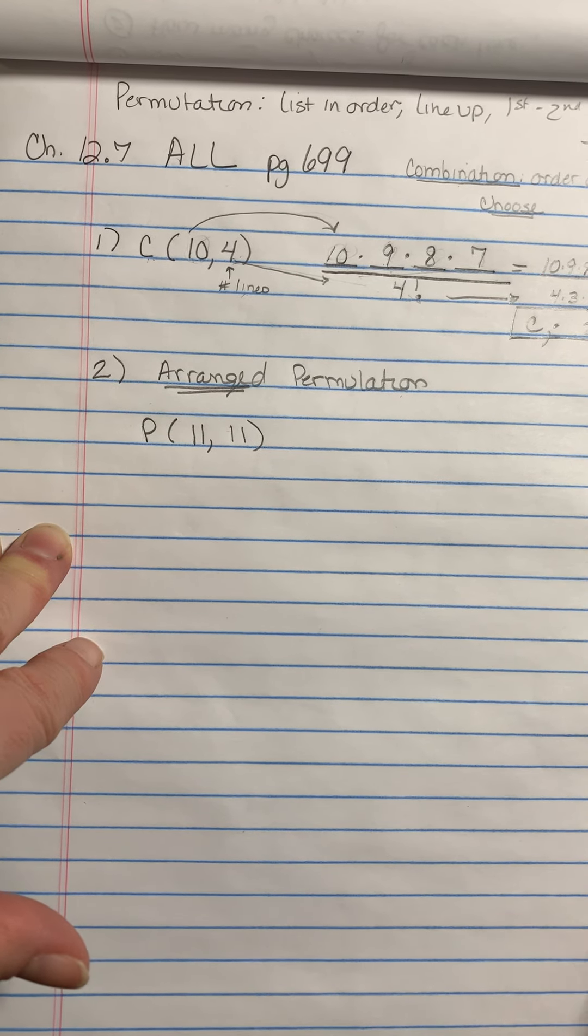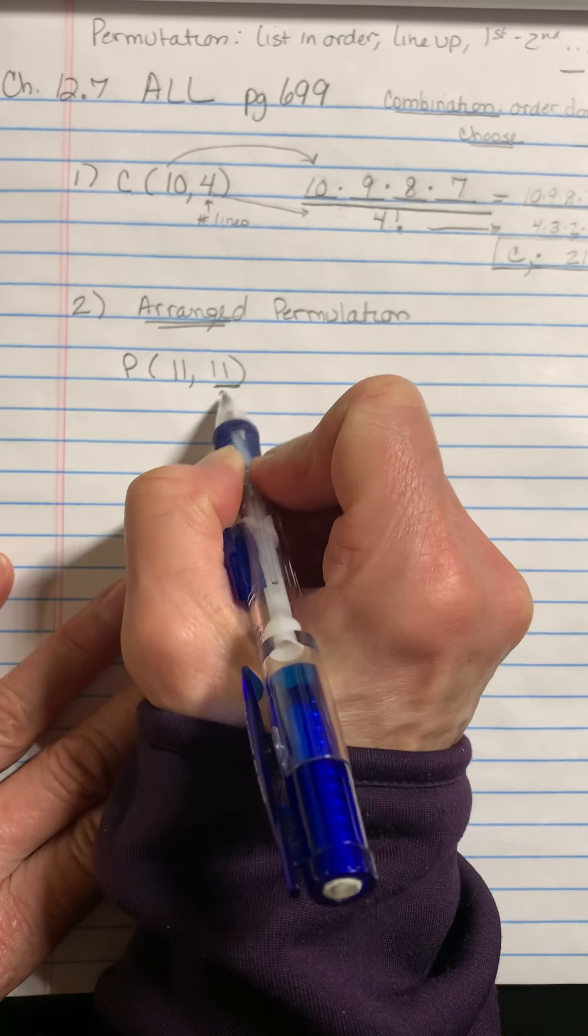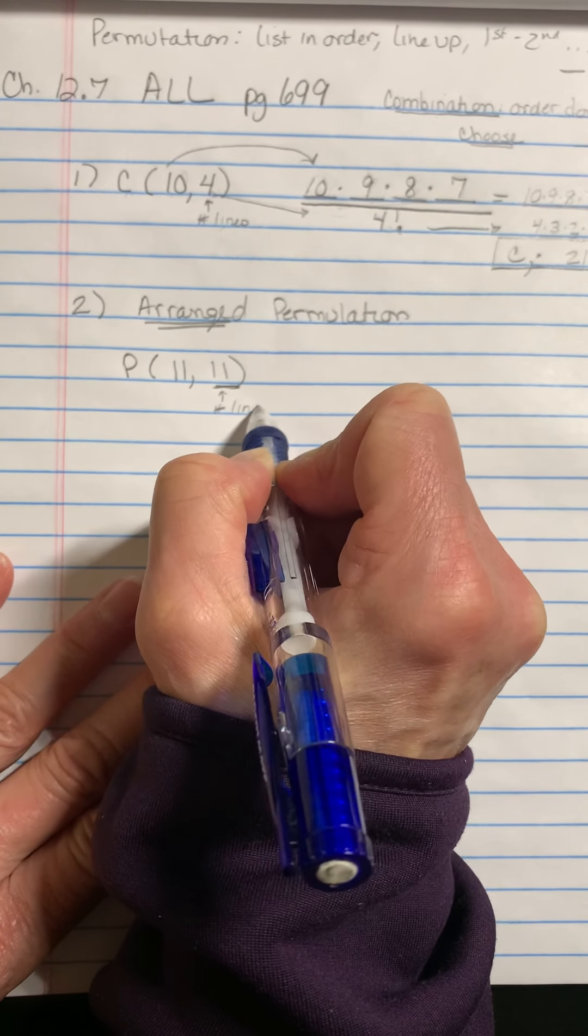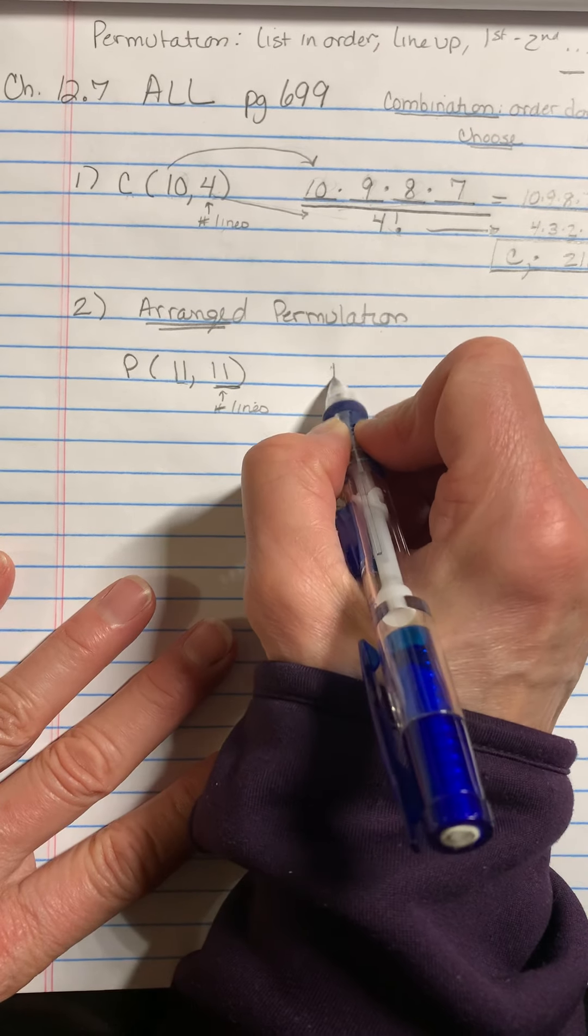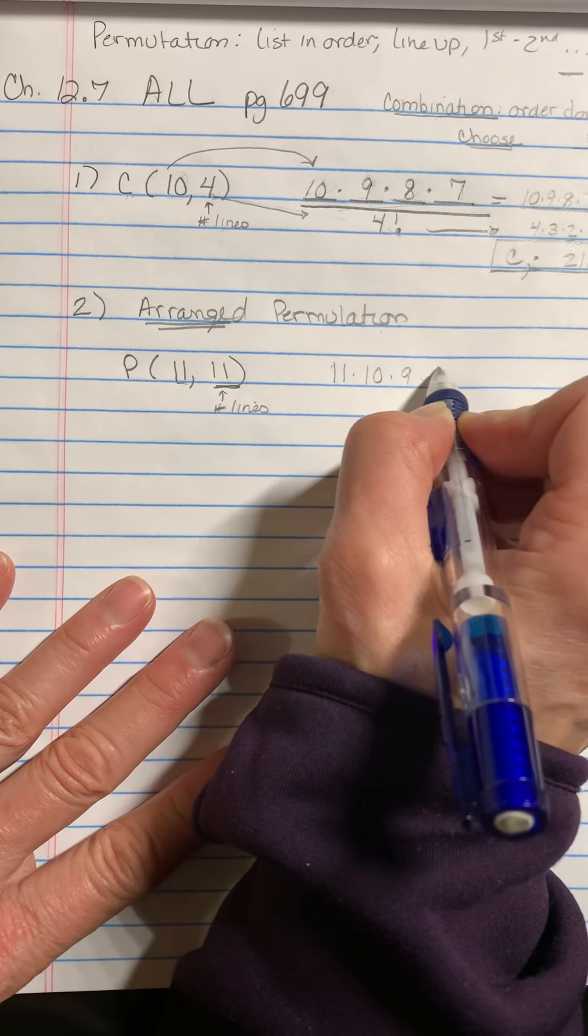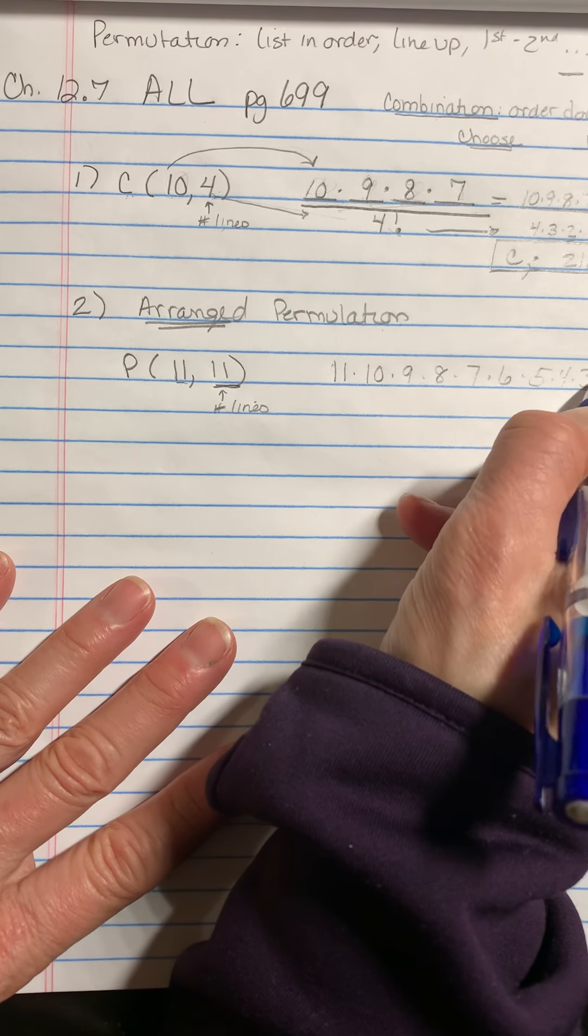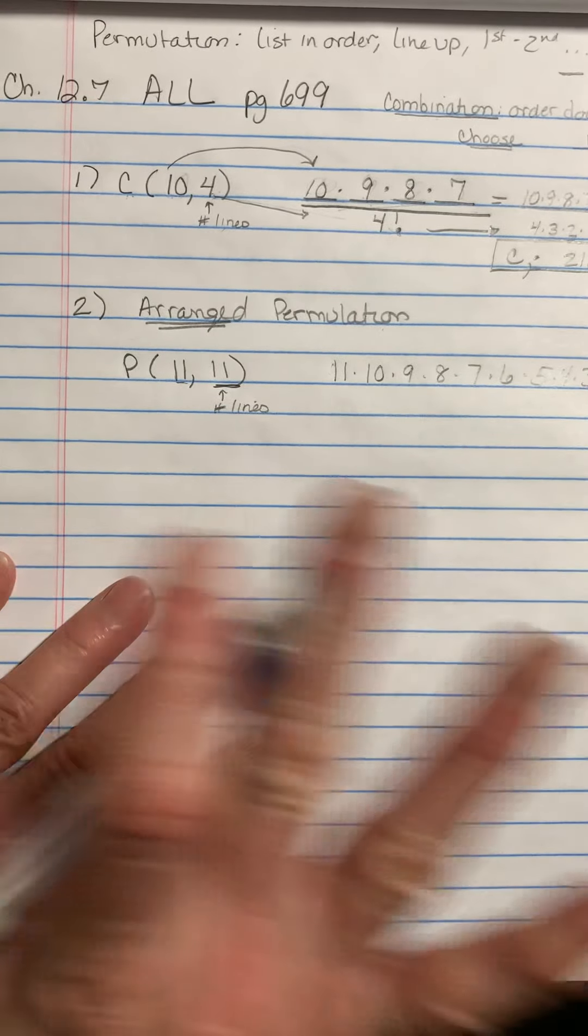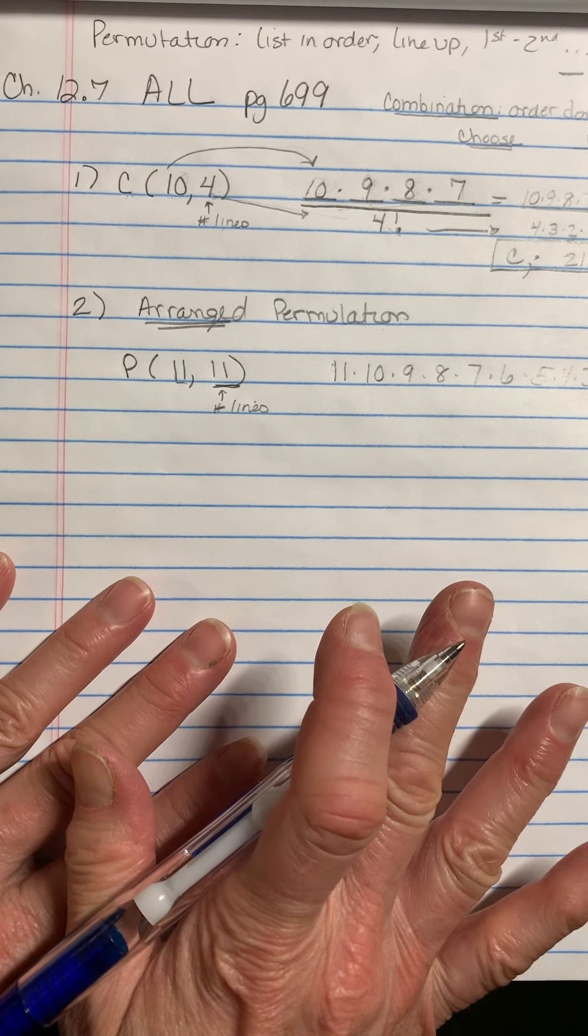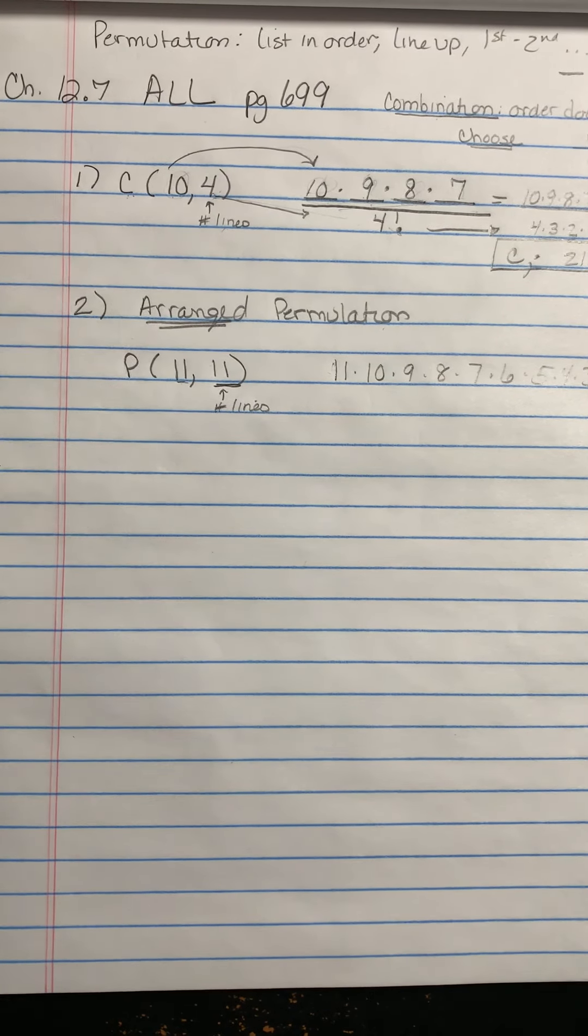So really all this is, is a factorial because it tells you this is the number of lines and this is what you get to start at. So it's going to go 11 times 10 times 9 times 8 times 7 times 6 times 5 times 4 times 3 times 2 times 1 and not division, no division in a permutation because you're not trying to get rid of the doubles.